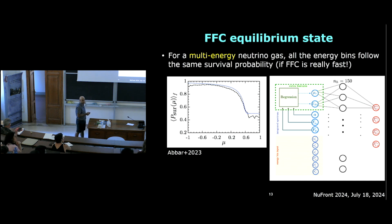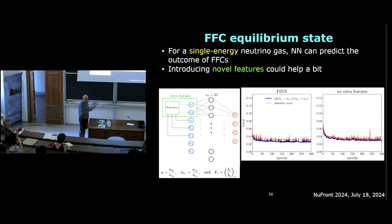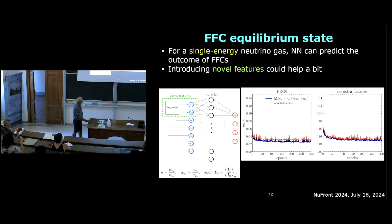Q: The training loss curves seem to show not much improvement from the first epoch — was the network already good from the start? A: Because the training data is produced artificially, we are not limited in the number of data points, so each epoch already covers a huge number of data points. For that reason, even in the first epoch we see good results. The error at epoch zero with random weights would be large, but it's not clearly visible in the plot.